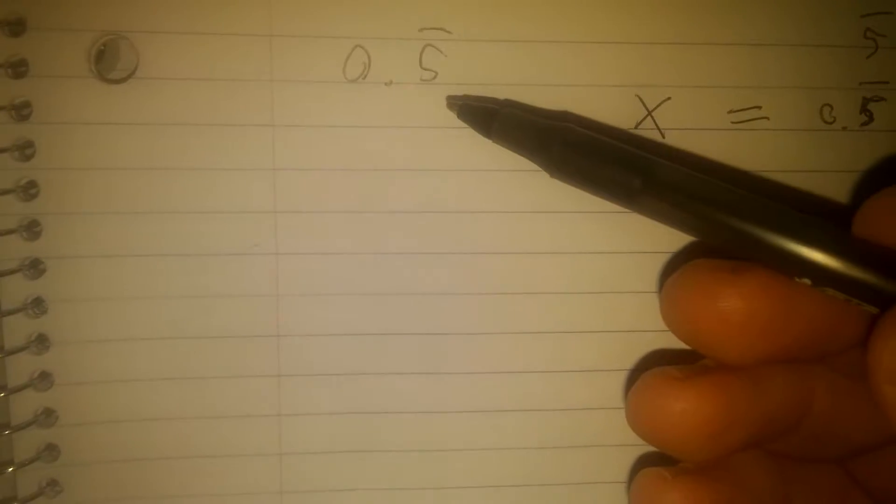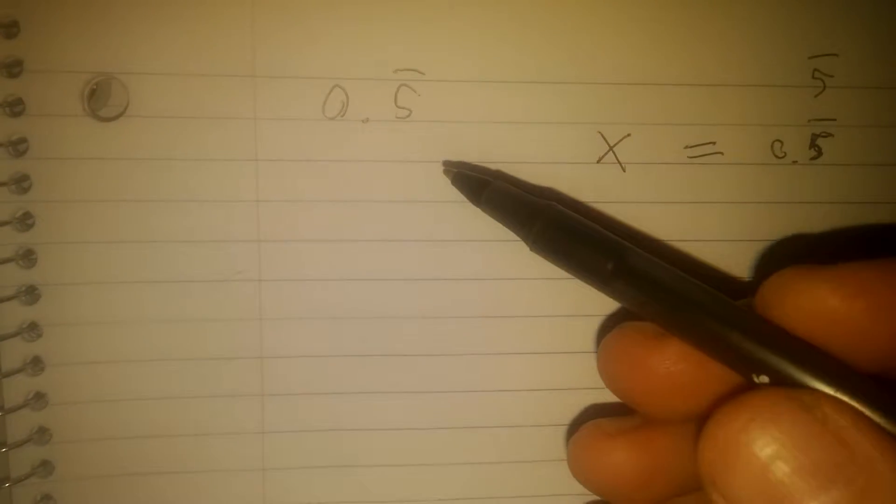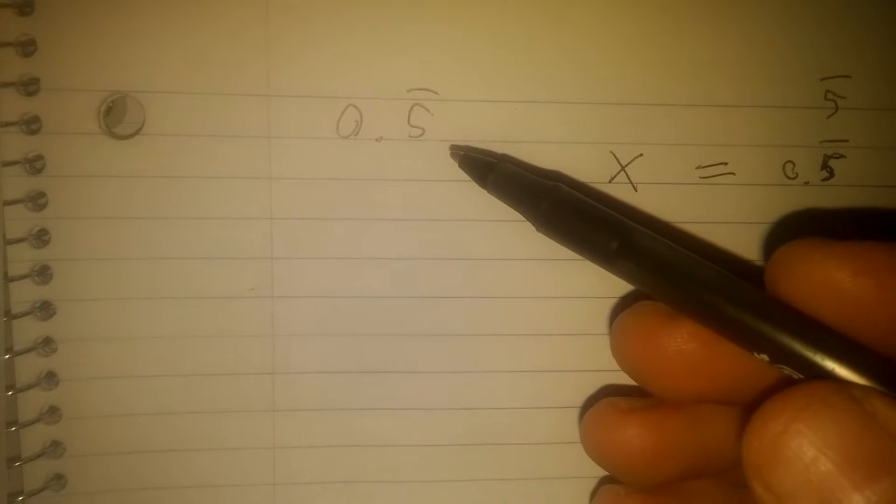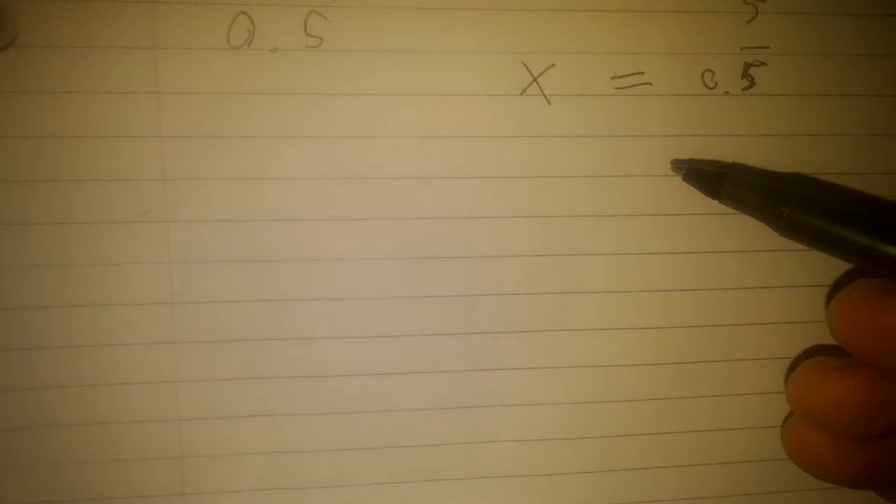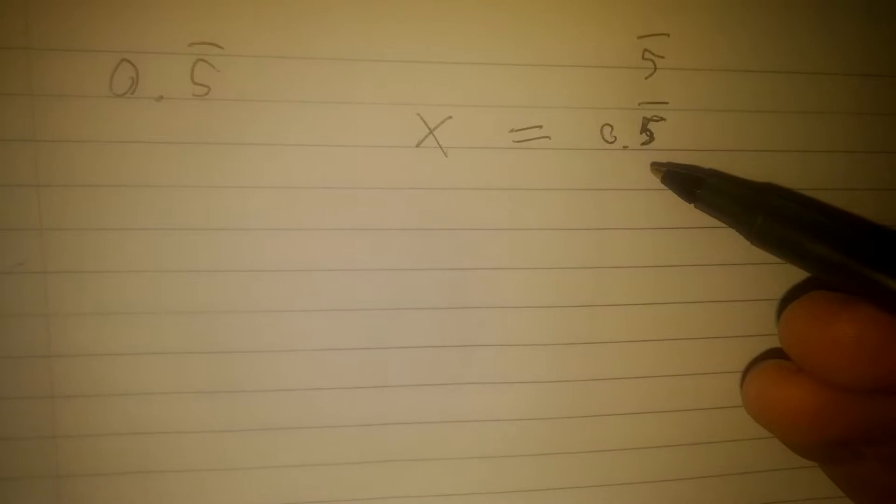The thing you want to get about this is the thing that makes them annoying for conversion is there's a repeating part. So I'm going to use an algebra trick to make the repeating part go away. I'm going to declare that x equals 0.5 repeating.